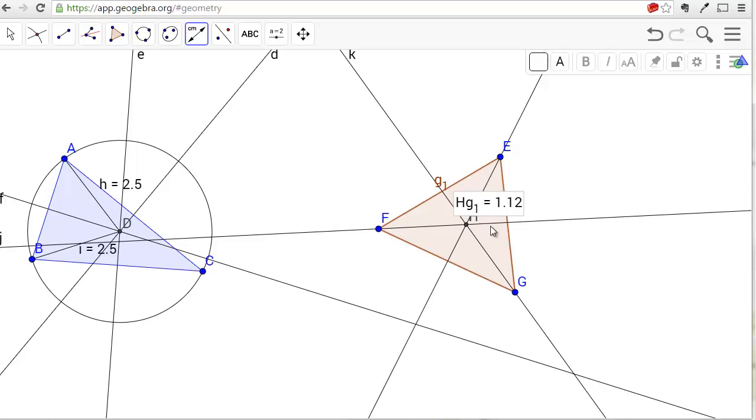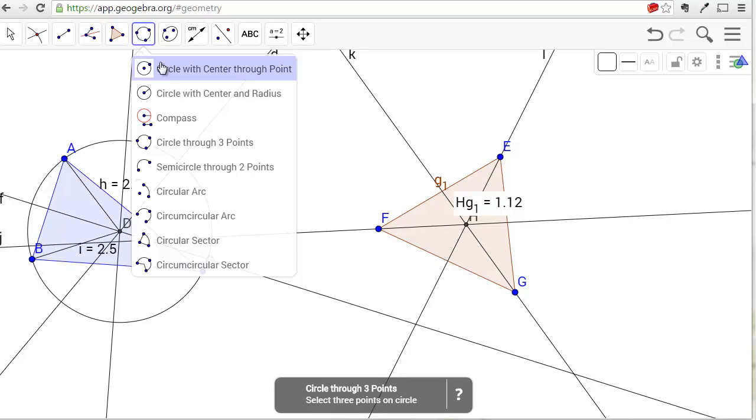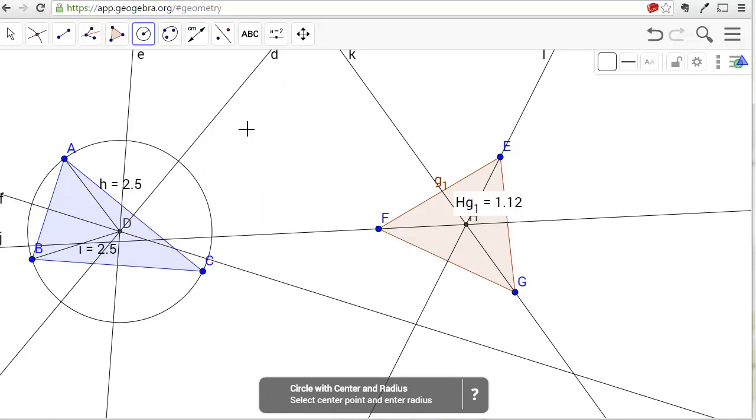I suspect that it's also 1.12 between H and side EG, and also between H and side FG. So we can verify that by creating a circle with the center and radius.